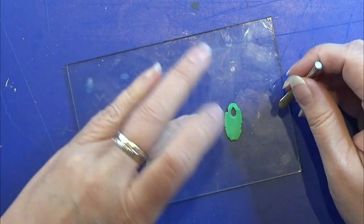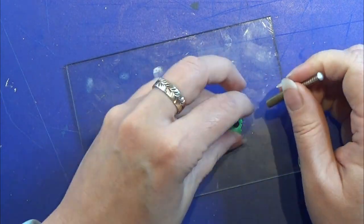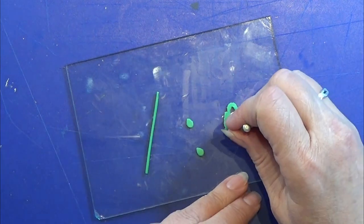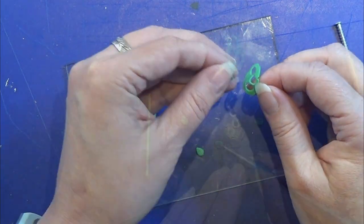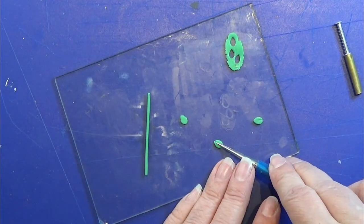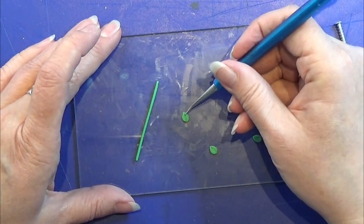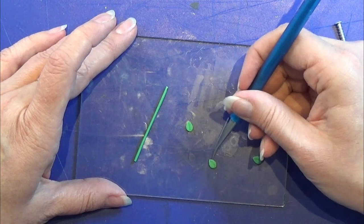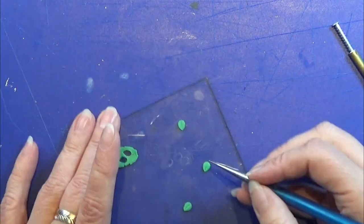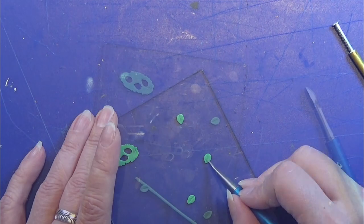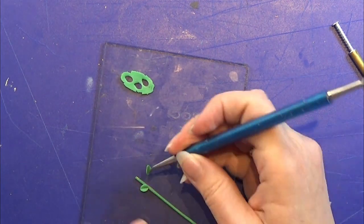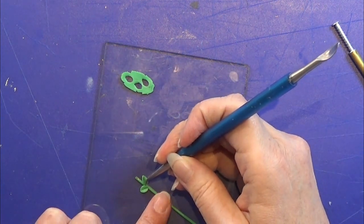Then I rolled out some thin green clay and I have this leaf-shaped cutter that I am going to cut out some leaves with. Then I am using this needle tool to make some marks in these leaves to make them more organic looking. And I place them onto the stem of the flower.